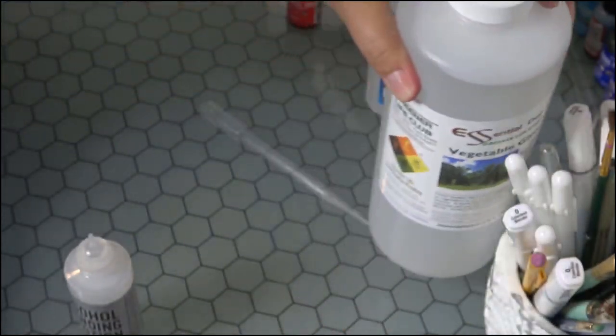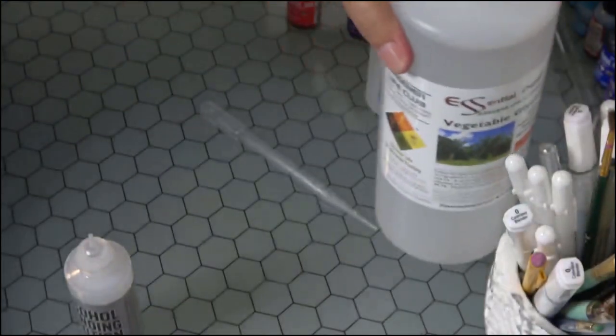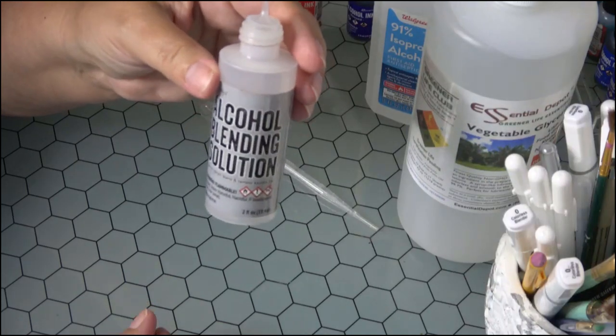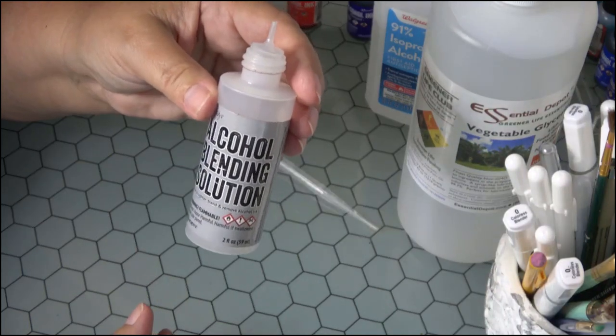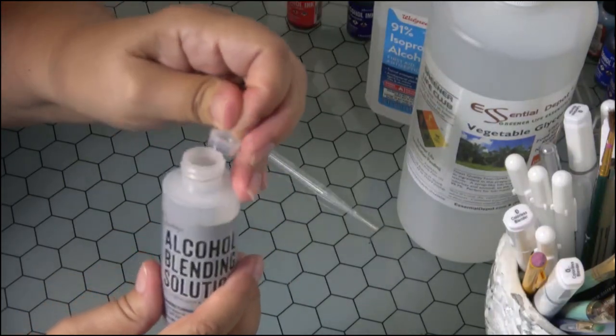So I'm just going to add three drops of this glycerin into a bottle filled with 91% isopropyl rubbing alcohol. Watch this. All you need to do is get the lid off.